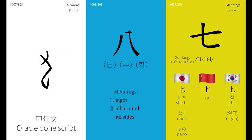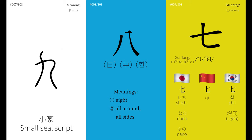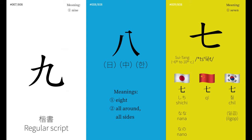Others, however, think that the symbol is a bent arm and that it meant elbow. It then came to symbolize a fist bumping up against something. Since 10 is the final number when counting with our fingers, the symbol came to mean 9, which metaphorically bumps up to 10. Regardless of which explanation you prefer, it is this character that evolved in shape to become 9 in modern Chinese, Japanese, and Korean.